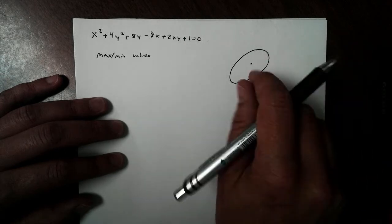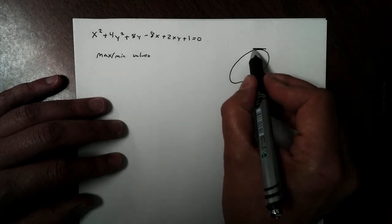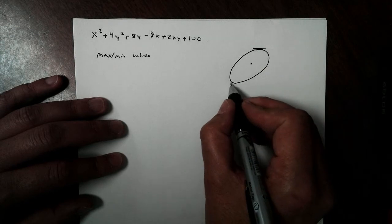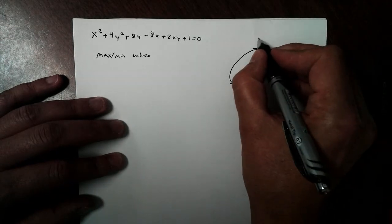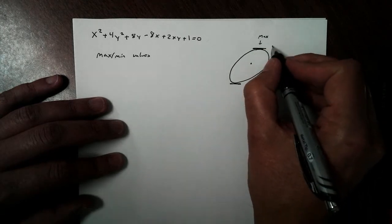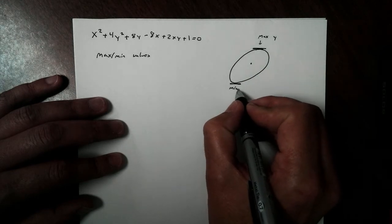Up top. Where does my minimum value occur? On the bottom. So there's my maximum, but we've got to be careful, this is going up and down. This would be like my maximum y, and this would be like my minimum y.